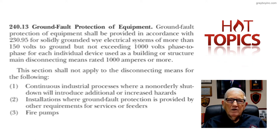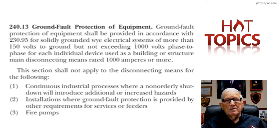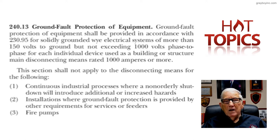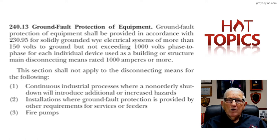For a continuous process or equipment that you can't afford to go down due to leakage current and so forth, you don't want to let that happen. So 240.13 item one addresses that and says you would not have to have it there, subject to the approval of the authority having jurisdiction per 90.4. The third item is a fire pump. We don't want ground fault protection of equipment on a fire pump. A fire pump needs to operate to a failure in accordance with article 695 and NFPA 20, which deals with fire pumps.